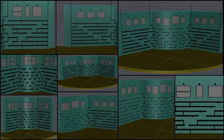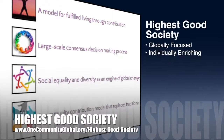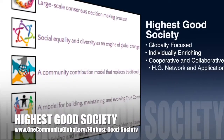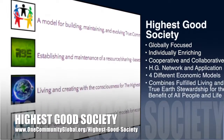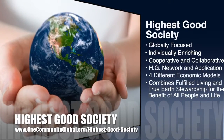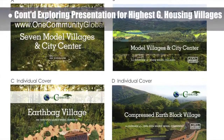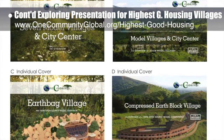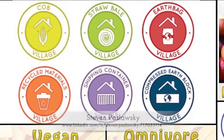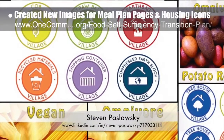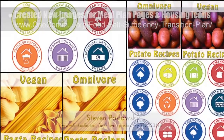One Community's approach to highest good society is globally focused, individually enriching, cooperative and collaborative — it includes a highest good network and application, four different economic models, and combines fulfilled living and true earth stewardship for the benefit of all people and all life on this planet. This week the core team continued exploring how to create an open source standardized presentation for highest good housing villages. Steven Poslowski, graphic designer, created new images for the food self-sufficiency plan omnivore and vegan meal plan pages, along with icon ideas for the different highest good housing pages.